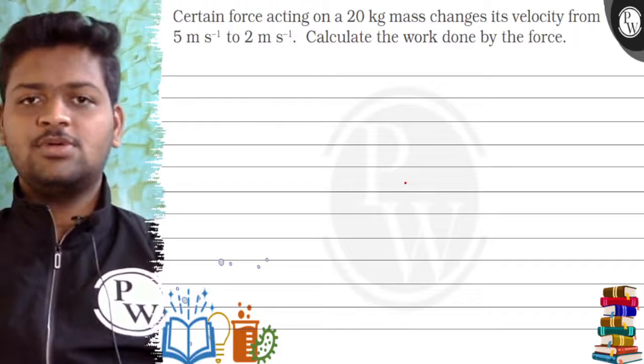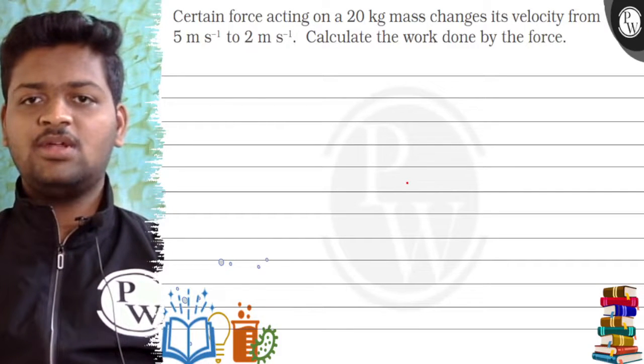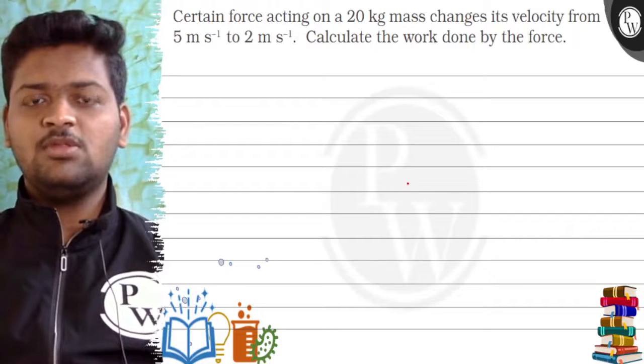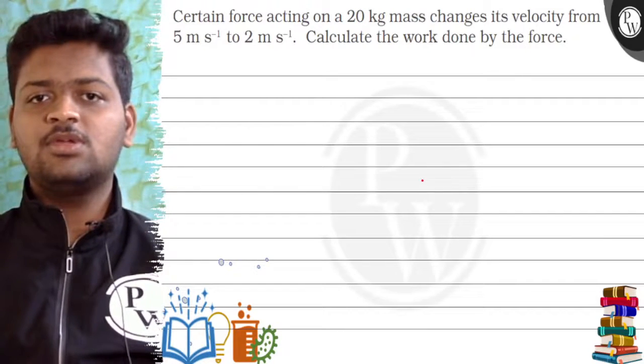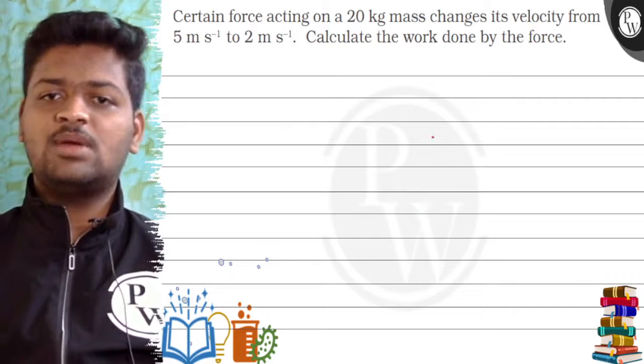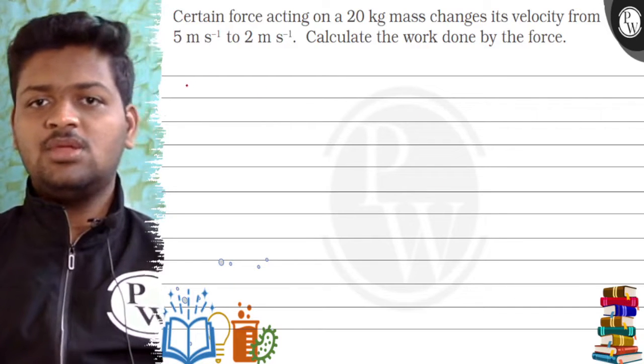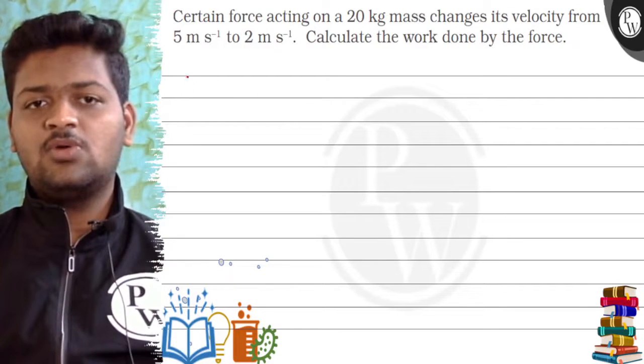Hello guys, let's see this question: Certain force acting on a 20 kg mass changes its velocity from 5 meters per second to 2 meters per second. Calculate the work done by the force.